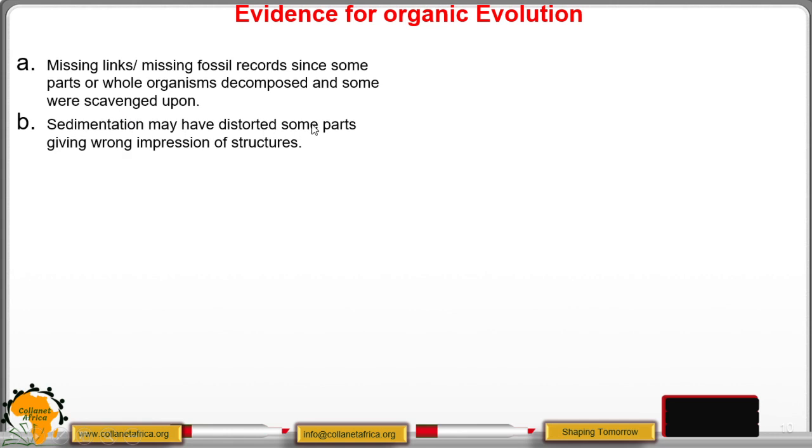Sedimentation may have distorted or destroyed some parts of an organism giving the wrong picture of the structures. So the process of sedimentation when rocks are being formed, some sediments or a particular fluid fills some other remains and then those remains are distorted. They are destroyed. Therefore, we have a wrong picture of the structures. Geological activities like earthquake faulting may have destroyed the fossils. So geological activities like earthquakes faulting destroyed these evidences.